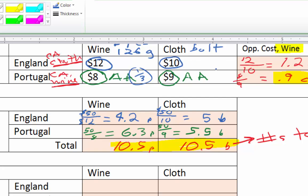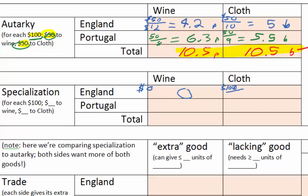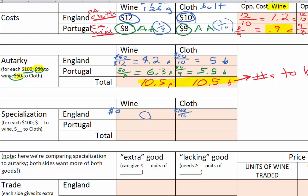The party that is less bad often does best going all out on that product. So I'll have England go all out on cloth, putting zero dollars toward wine and all $100 toward cloth. Each unit of cloth costs $10, so $100 divided by $10 means England makes 10 bolts of cloth entirely on their own. We need 10.5, so if Portugal makes just one bolt of cloth, we'd already be ahead.